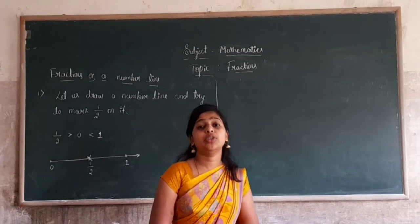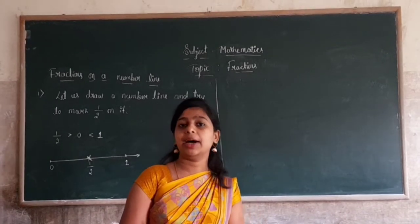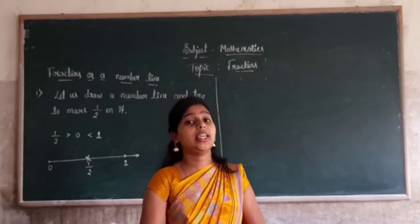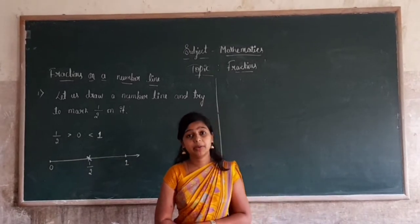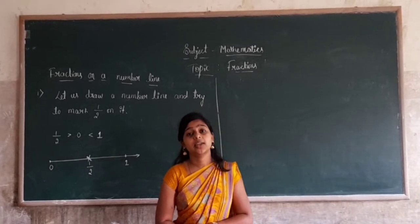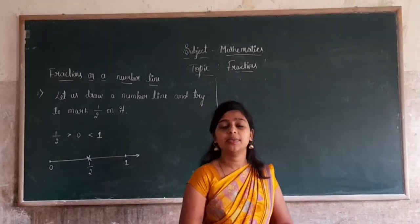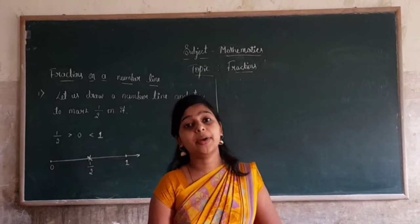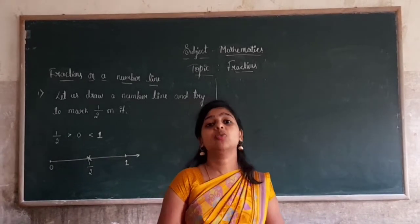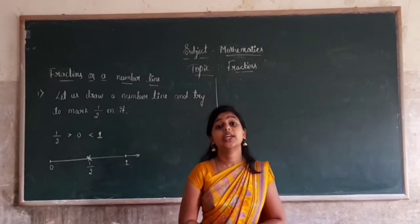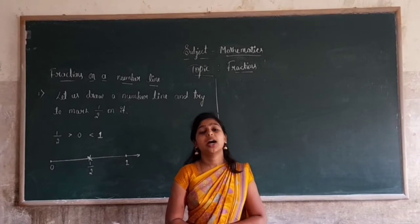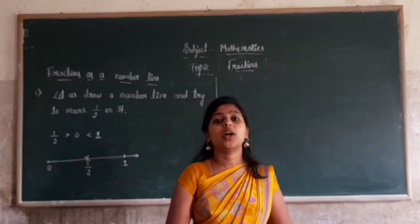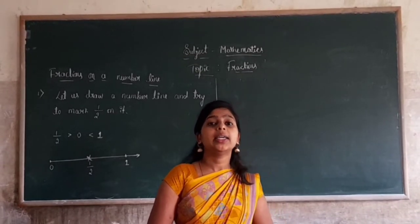Suppose we want to show 1 by 3 on a number line. How many equal parts should the length between 0 and 1 be divided into? We divide the gap between 0 and 1 into 3 equal parts and mark 1 part as 1 by 3.